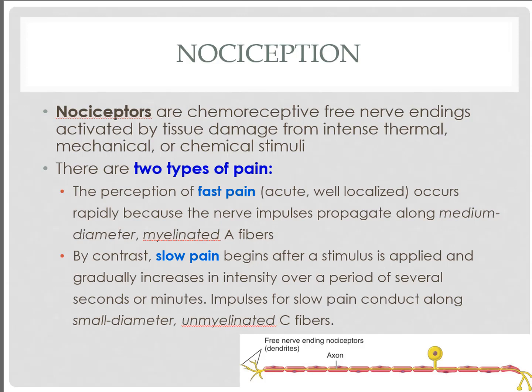That type of information travels to the central nervous system through two primary methods, described by the types of pain exhibited: fast pain or slow pain. Fast pain is typically acute and very localized — a pinpoint on the skin — and travels along myelinated axons with medium diameter. Myelinated fibers with larger diameter axons can send action potentials fast back to the central nervous system.